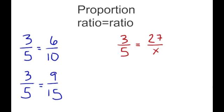A proportion is basically saying that two ratios are equivalent. In this first example, 3 fifths is equal to 6 tenths. You can say that they're equivalent because you can simplify 6 tenths into 3 fifths, and because those two are equivalent — 3 fifths equals 3 fifths — that means it's proportional.